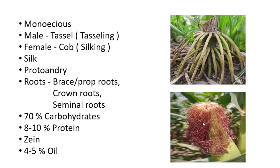Another important characteristic is that maize is protandrous in nature, where the male part matures first. The male part — the tassel — forms and matures first, and hence maize is called protandrous.